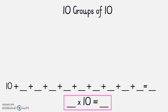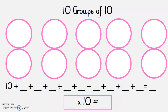Sorry — this is the last one. The last one we're going to do is 10 groups of 10. Draw 10 circles, do your repeated addition, and then your times table sum. I'm going to let you do this yourself — I'm not going to give you the answer. Good luck — pause the video.